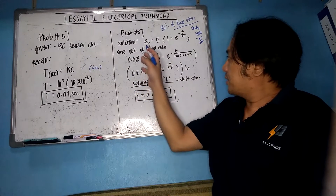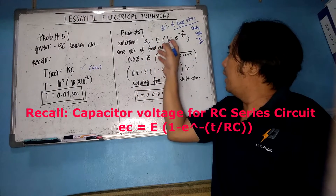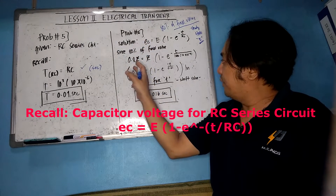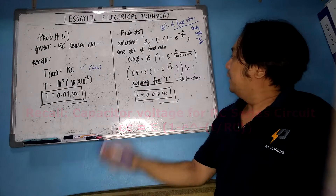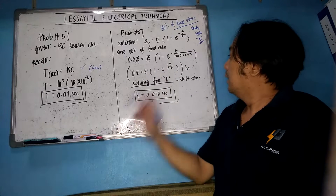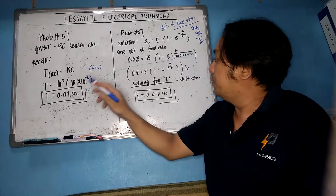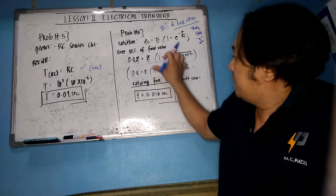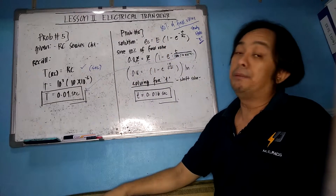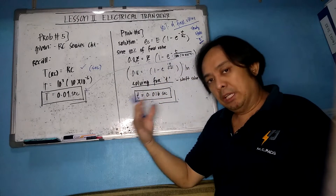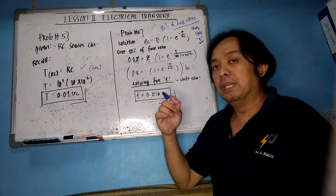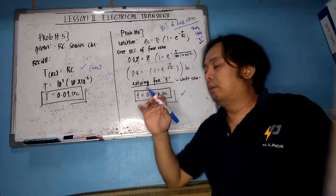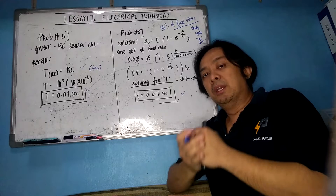For problem six, go back to the equation: E_C = E × (1 − e^(−t/RC)). Since we need 80% of the final value, 0.8E = E × (1 − e^(−t/RC)), so the E cancels. Substituting RC = 0.01 seconds (the time constant from problem five): 0.8 = 1 − e^(−t/0.01). Solving for t using algebra (take the natural log of both sides), the answer is 0.016 seconds, or 1.6 milliseconds.